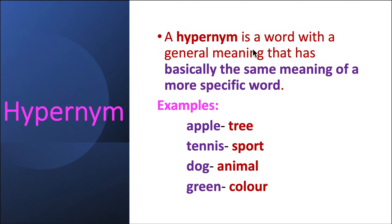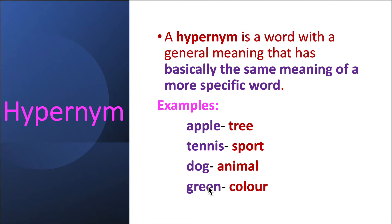We move on to the next: hypernym. A hypernym is a word with a general meaning that encompasses the meaning of a more specific word. Examples: apple/tree, tennis/sport, dog/animal, green/color. Apple is a more specific word but refers to the general category of tree. Likewise, tennis is a specific word but refers to the general category of sport. Dog is a more specific word — a kind of animal — and refers to the general category animal. Likewise, green and color. Such examples are referred to as hypernym.